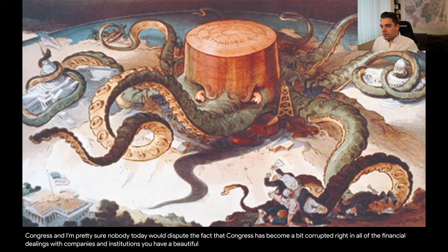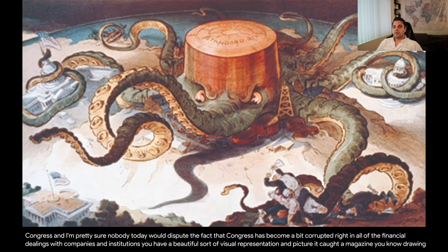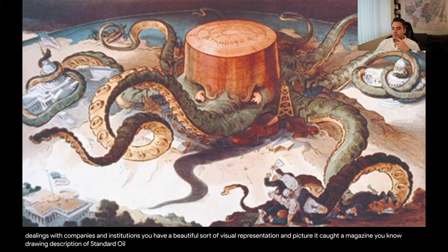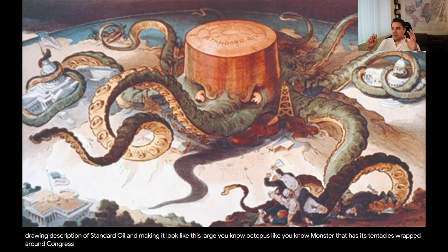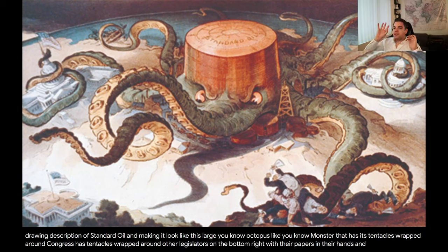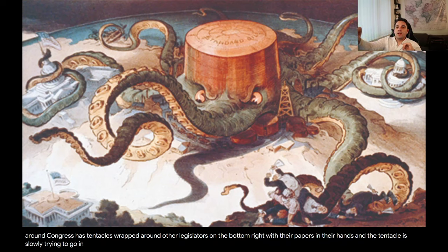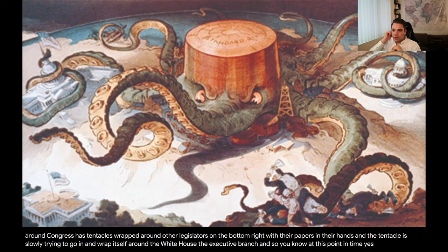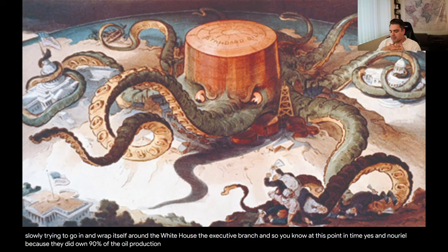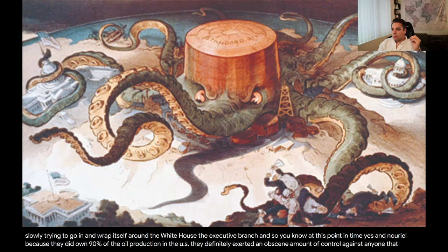Here we have a beautiful visual representation — a magazine drawing of Standard Oil depicted as a large octopus-like monster with its tentacles wrapped around Congress, wrapped around other legislatures with papers in their hands, and a tentacle slowly trying to wrap itself around the White House, the executive branch. At this point, Standard Oil, owning 90% of oil production in the U.S., definitely exerted an obscene amount of control against anyone they wanted to go up against.